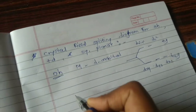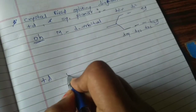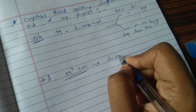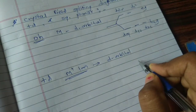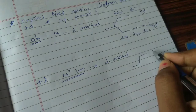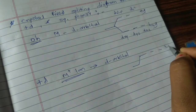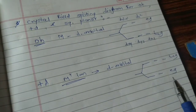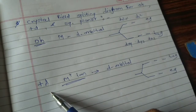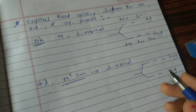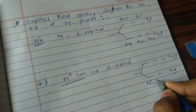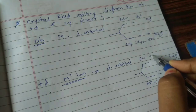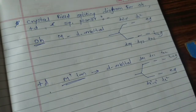Opposite to that, in case of tetrahedral complexes, the metal ion's orbitals distribute their energy into two energy levels. The upper energy level is T2G and the lower energy level is EG — which is totally opposite to what happens in octahedral complexes. In the lower energy level there are the DX2-Y2 and DZ2 orbitals, and in the upper energy level there are the DXY, DYZ, and DXZ orbitals.